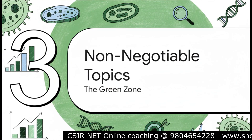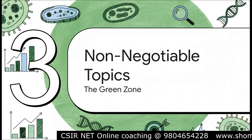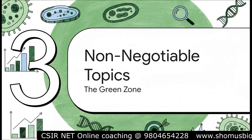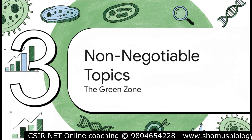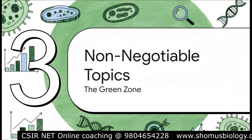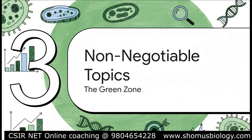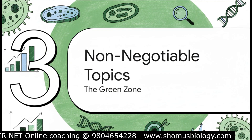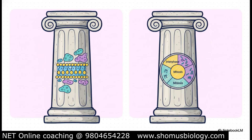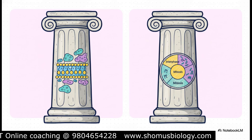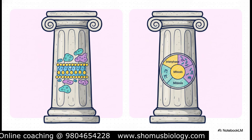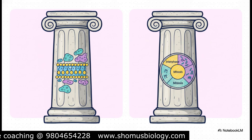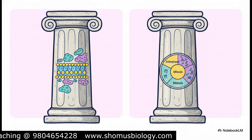Let's put this strategy into action, starting with the green zone. These are the two topics that consistently dominate Unit 2. If your time is limited, this is where you need to live and breathe. Your two non-negotiables are Topic A — Membrane Structure and Function — and Topic D — Cell Division and Cell Cycle. Think of these as the two main pillars holding up the entire unit.